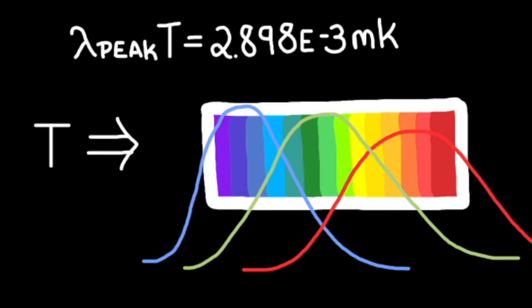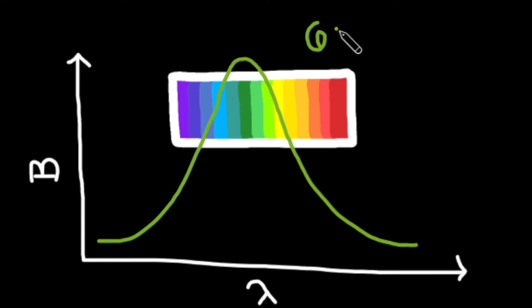Hotter stars peak at shorter, bluer wavelengths, while colder stars peak at longer, redder wavelengths. Medium-temperature stars—and when I say medium, I'm talking 6000 Kelvin, like the Sun—